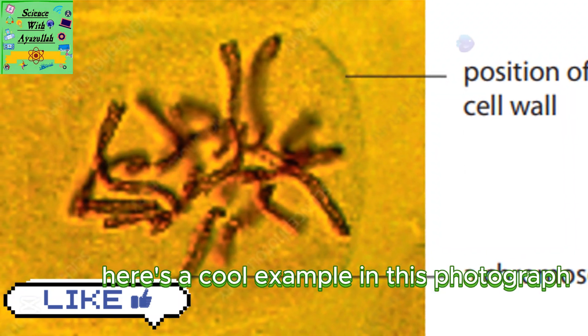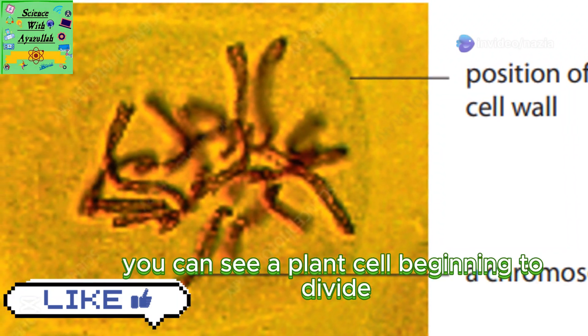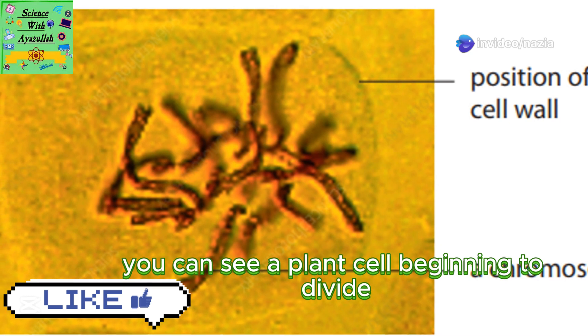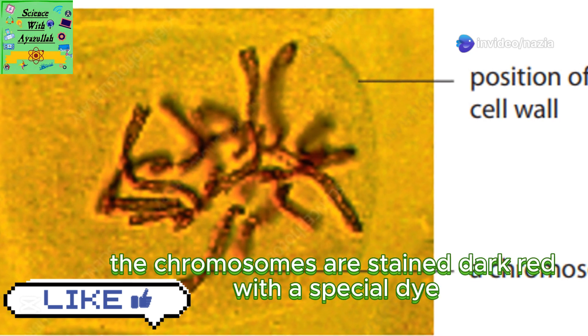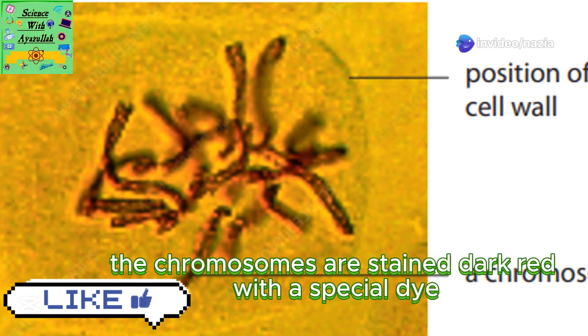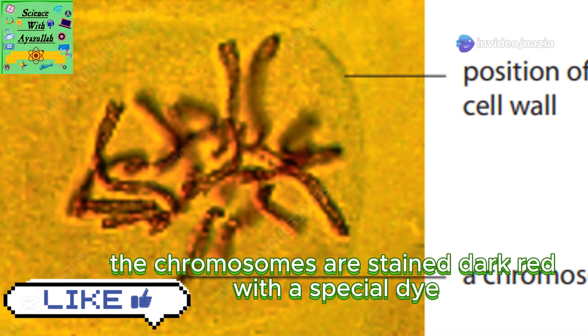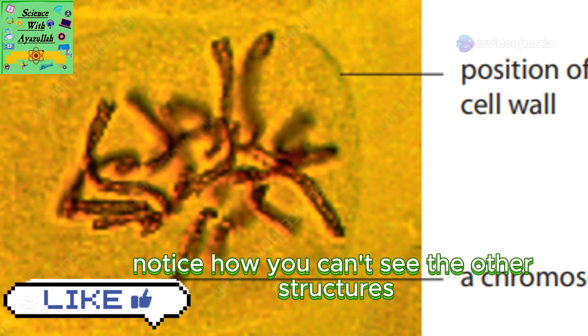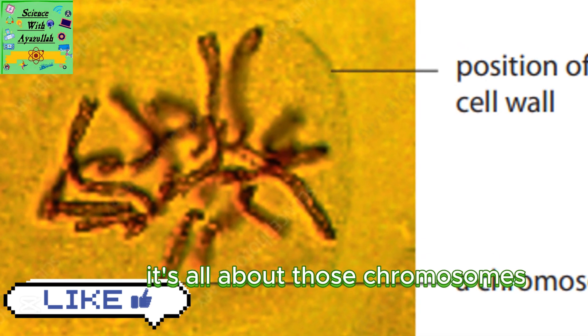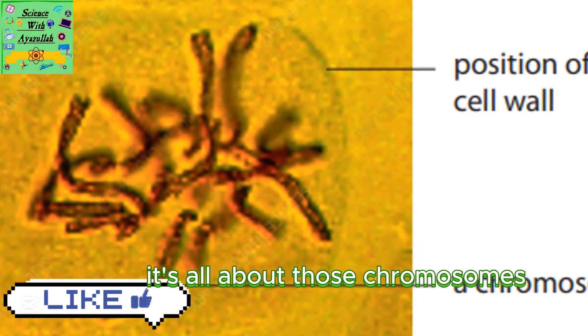Here's a cool example. In this photograph you can see a plant cell beginning to divide. The chromosomes are stained dark red with a special dye. Notice how you can't see the other structures — it's all about those chromosomes.